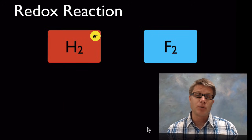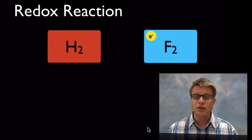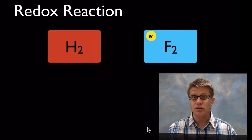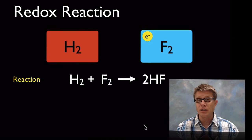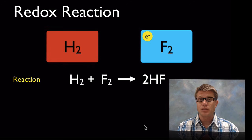Let me give you a simple example of a redox reaction. If we have hydrogen gas and fluorine gas and they combine to create hydrogen fluoride, that's a redox reaction. The electrons are being lost from the hydrogen, so in this reaction hydrogen is being oxidized and the fluorine is being reduced — it's gaining these high energy electrons.